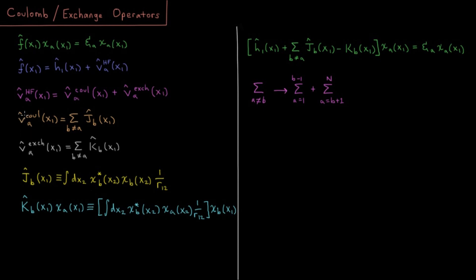So our Coulomb operator here, that is going to be our Coulomb operator for an electron in spin orbital A. It's going to be a sum over all electrons which are not in spin orbital A of the Coulomb operator for spin orbital B acting on electron one. So we'll define that down below in a second.